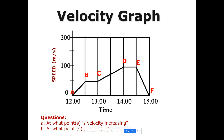To find where velocity is decreasing, look for a negative slope — when speed slows down. The object heading towards the grocery store slows down between points E and F. Between points B and C, speed remains the same even though time is passing — that is constant velocity.